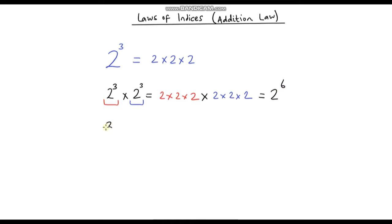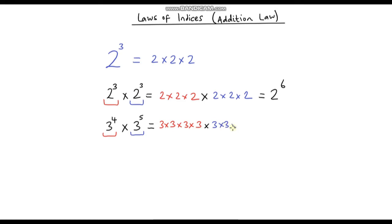Let's do another one: 3 to the power 4 multiplied by 3 to the power 5. 3 to the power 4 means 3 times 3 times 3 times 3, and we multiply that by 3 to the power 5, which is 3 times 3 five times. How many times are we multiplying 3 by itself? 1, 2, 3, 4, 5, 6, 7, 8, 9.